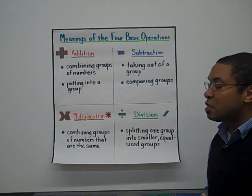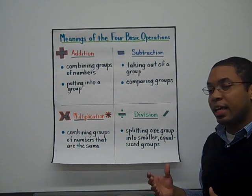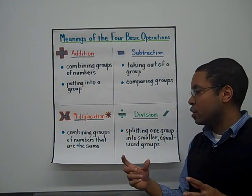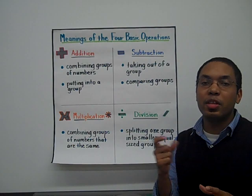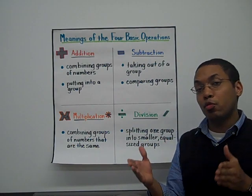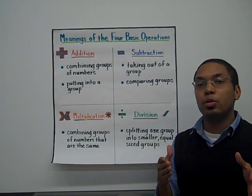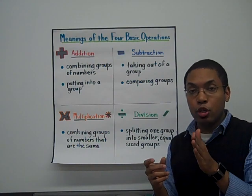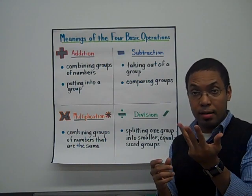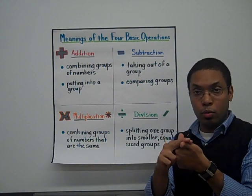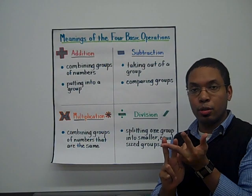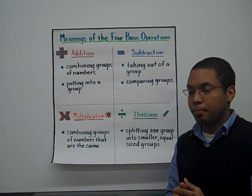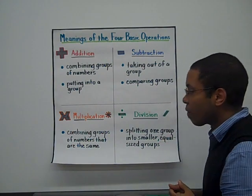The next one is multiplication. Multiplication means combining groups of numbers that are the same. So when I say 3 times 2, what I really mean is I'm combining 2 three times — 2 plus 2 plus 2 — which is really 6.